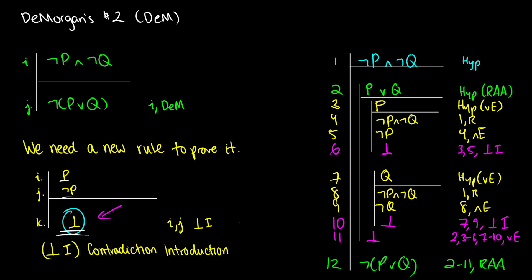So those are all the things we're doing in this video. Now, whenever you see any of these in your proofs, you can use them. If you're taking a course in person, the order that you learn these things might be different, but this is generally the procedure — once you've proven the rules, you can use them. Some books might call the extended system PL plus, or something like that. If you have any questions, you can ask in the comments below, and I'll get to you when I can.